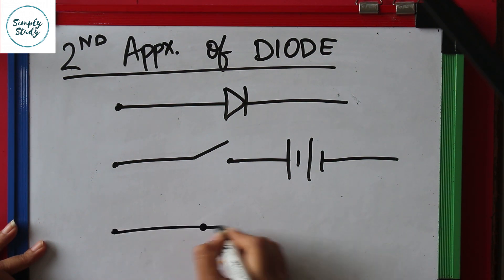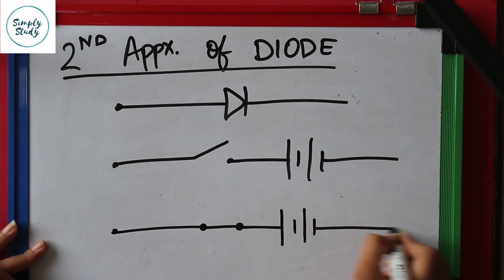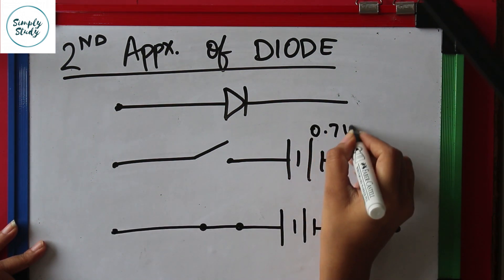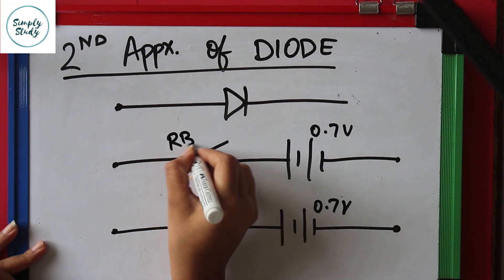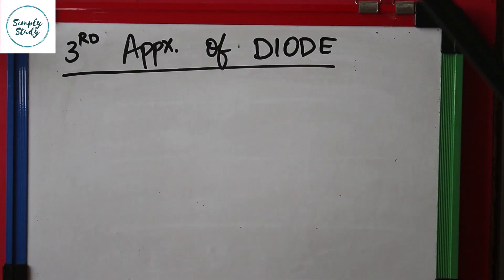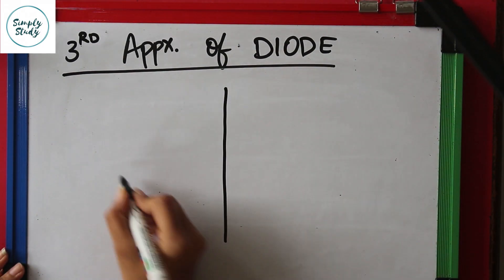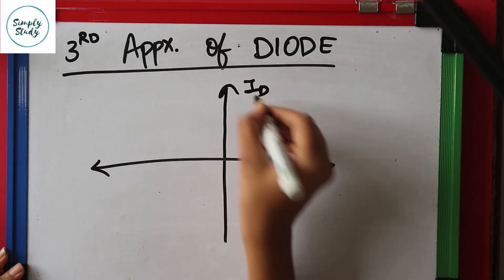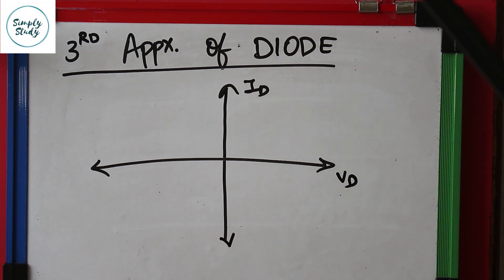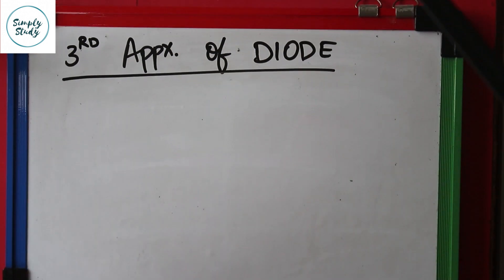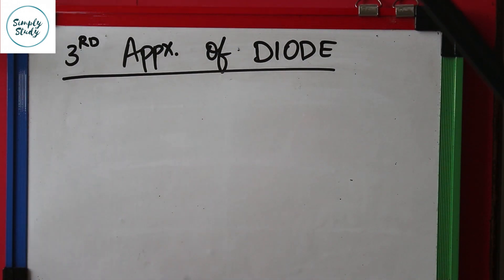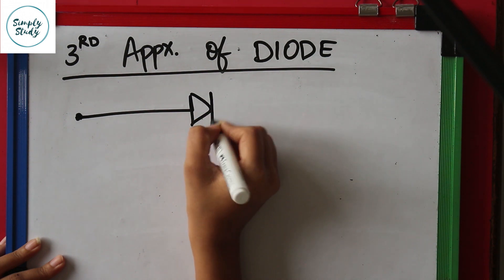So in forward bias when the diode is conducting, we will get 0.7 volts for any forward current. The third approximation: in this, a bulk resistance RB is included. Due to the bulk resistance, after the diode turns on, the voltage increases linearly with an increase in current. The greater the current, the larger the diode voltage because of the voltage drop across the bulk resistance.